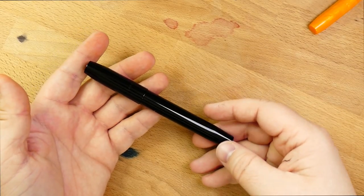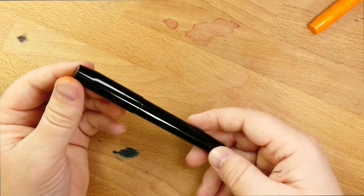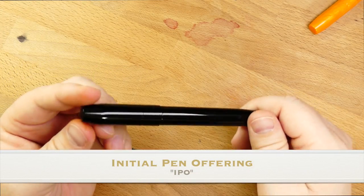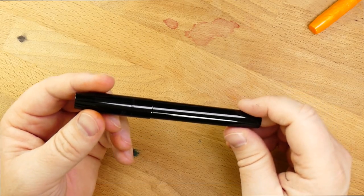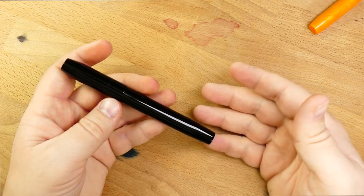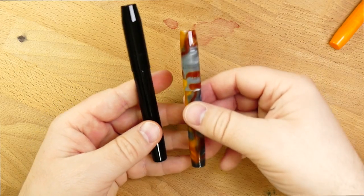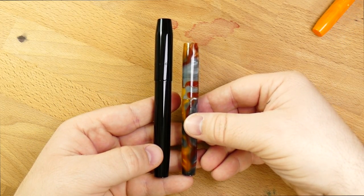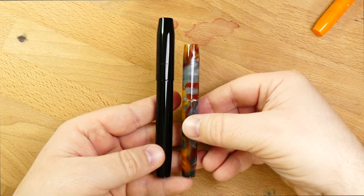But if you want to get the bigger nib, now there's an option. This is the Franklin Christoph number 46. This was introduced at the Philly Pen Show. This is one of the IPO pens. I think they are done selling these online. The IPO is over. As far as overall look, this is the same kind of thing as the 45. It is the same shape. It is just a different size in every dimension. It's bigger in every way.